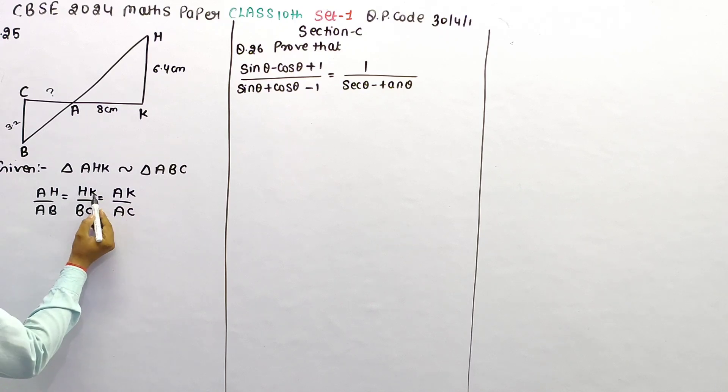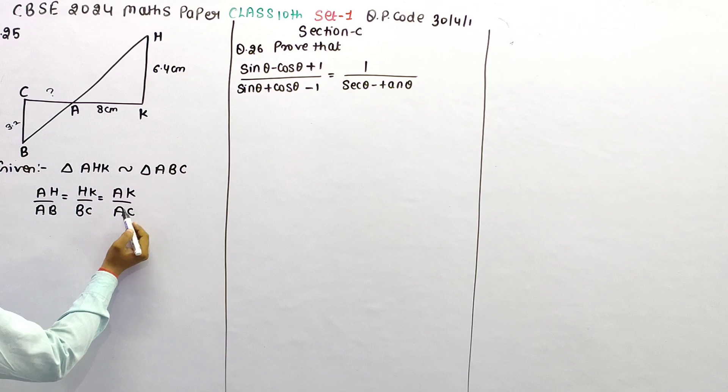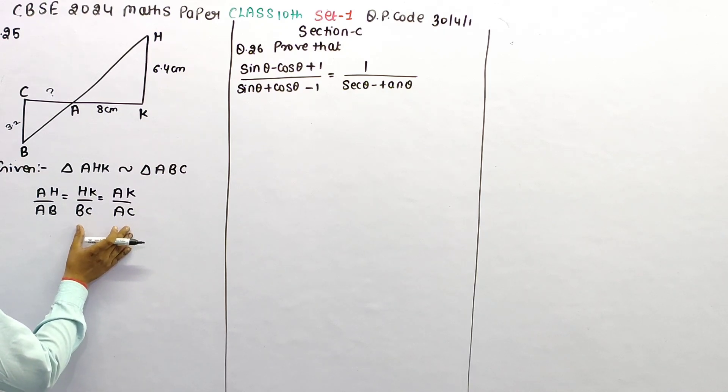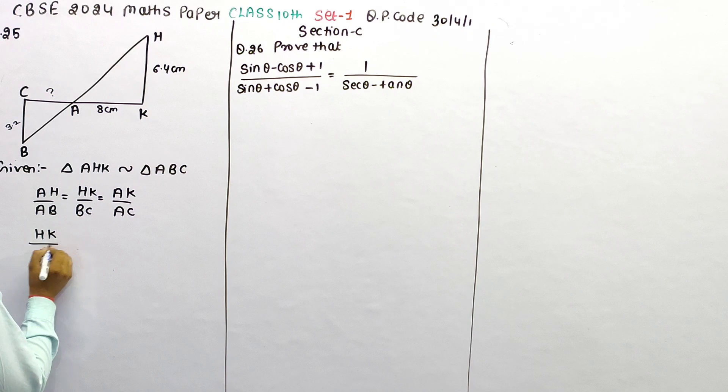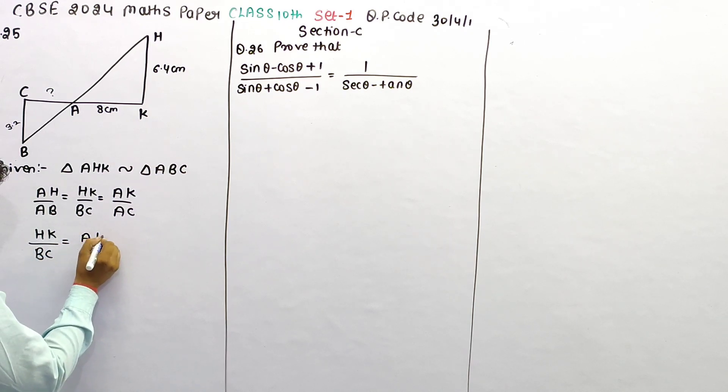Now you see, HK is given, BC is given, AK is given to us, and here AC needs to be found. So I can use these two pairs. Therefore, I can write: HK upon BC is equal to AK upon AC.